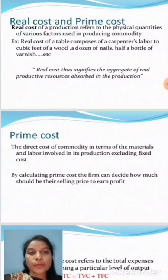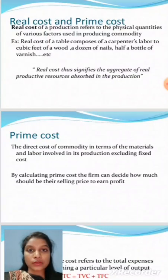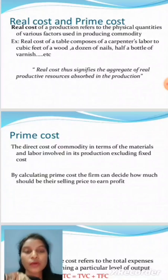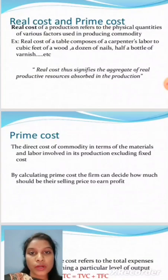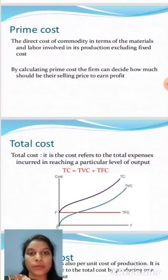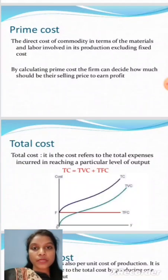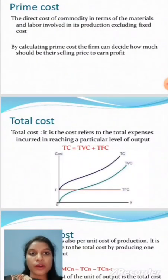Real cost of production refers to the physical quantities of various factors used in producing a commodity. For example, the real cost of a table includes the carpenter's labour, cubic feet of wood, a dozen nails, and half a bottle of varnish. Prime cost excludes fixed cost — all other direct costs of a commodity in terms of material and labour. By calculating prime cost, a firm can decide how much their selling price should be to earn profit.